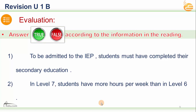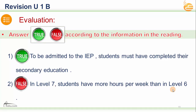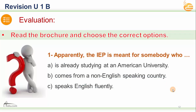After vocabulary, we have reading comprehension true/false questions based on the Unit One reading text. Number one: 'To be admitted to the IEP, students must have completed their secondary education' — this is TRUE. Number two: 'In Level 7, students have more hours per week than in Level 6' — this is FALSE, because hours vary by level and Level 7 doesn't necessarily have more than Level 6.